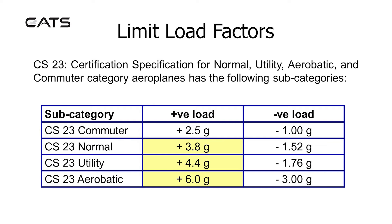Limit load factors under CS23, the certification specification for normal, utility, aerobatic and commuter category aeroplanes, are as follows: CS23 commuter — positive +2.5g, negative -1g. CS23 normal — +3.8g and -5.2g. CS23 utility — +4.4g and -1.76g. CS23 aerobatic — +6.5g and -1.76g.